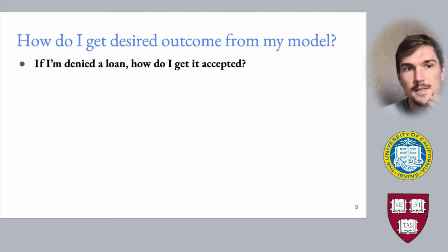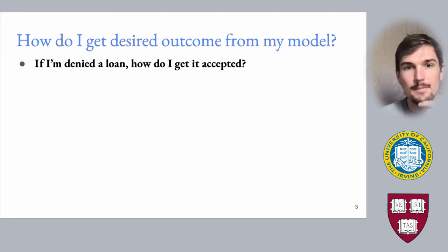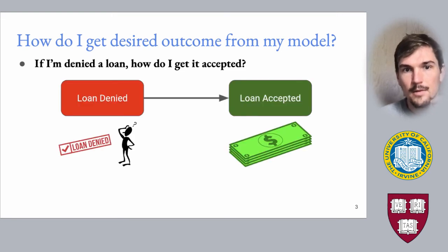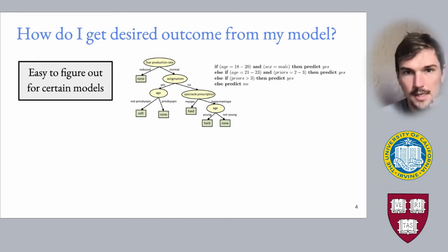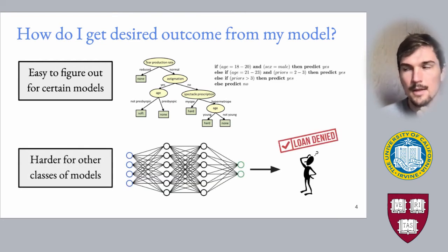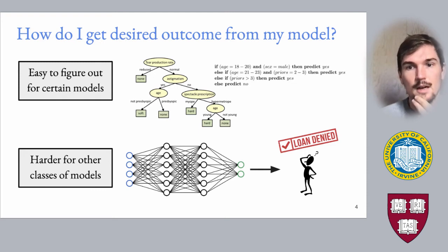To see what this means and perhaps why it's important: for an individual who's denied a loan by a machine learning model, we're probably interested in asking, how can this individual get their loan accepted? What do they need to do such that, according to the model, the loan will be accepted? For certain classes of models like a decision tree or a rule list, this is fairly straightforward to figure out. However, this is more difficult for other classes of models, such as deep neural networks, where it's quite tricky to figure out what you need to change to get the opposite prediction.